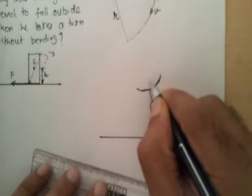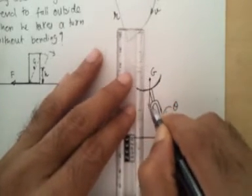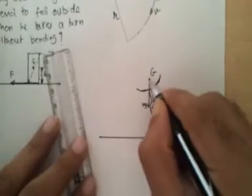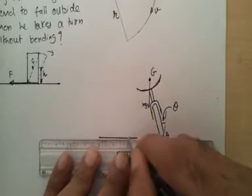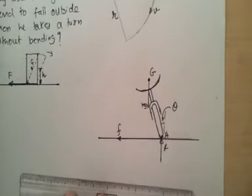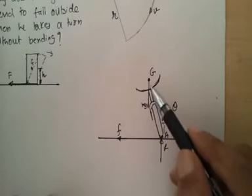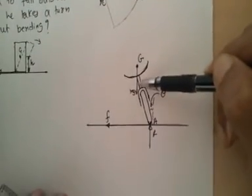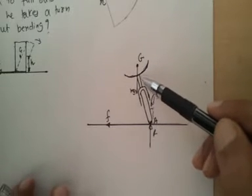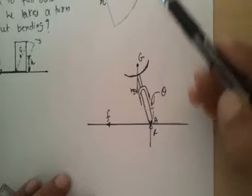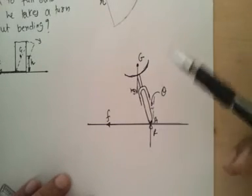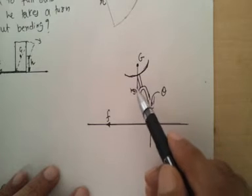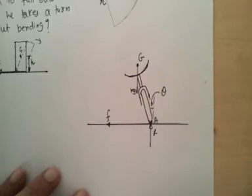The forces that come into play are again the same. G is the center of gravity; at G we have force mg. At point A, where the wheel meets the road, we have normal reaction R. And of course we have the frictional force F acting horizontally. The magnitudes of mg and R are the same as before — don't worry about the vector lengths shown in the diagram.